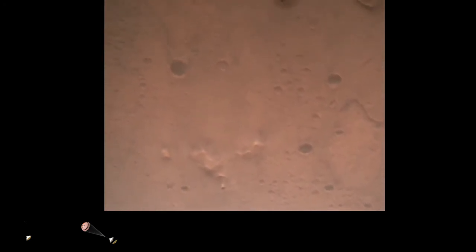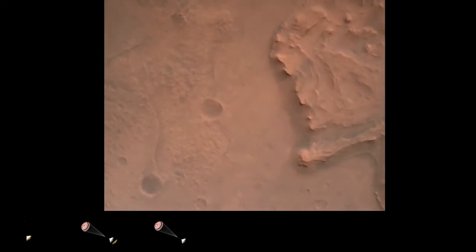Nav filter converged. Velocity solution, 3.3 meters per second. Altitude, 7.4 kilometers. Now has radar lock on the ground. Current velocity is about 100 meters per second, 6.6 kilometers above the surface of Mars.